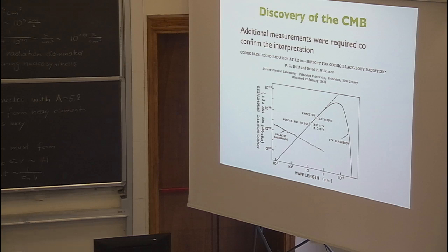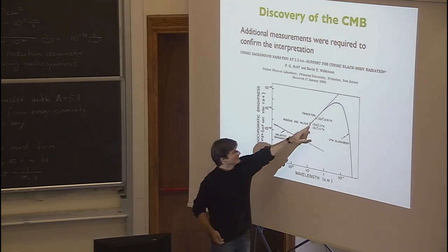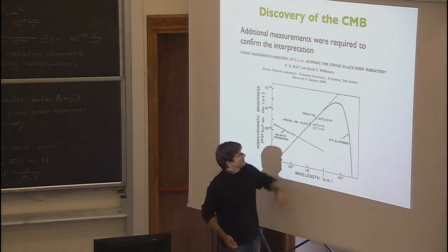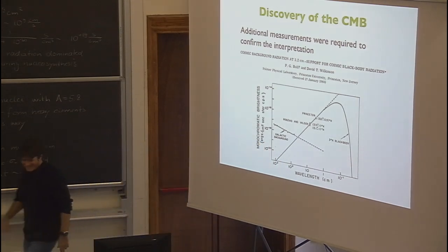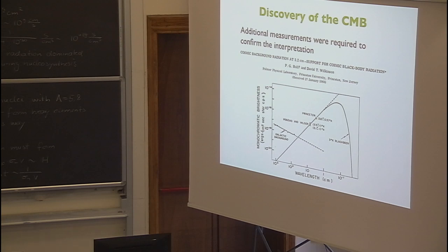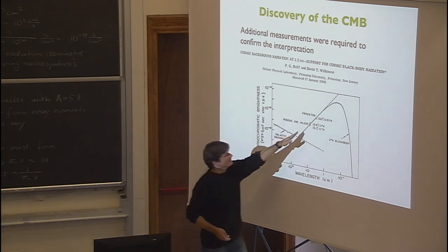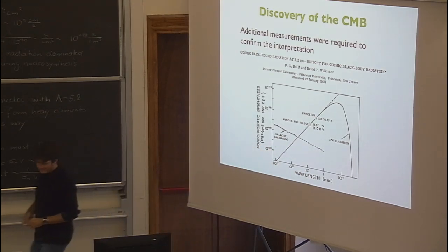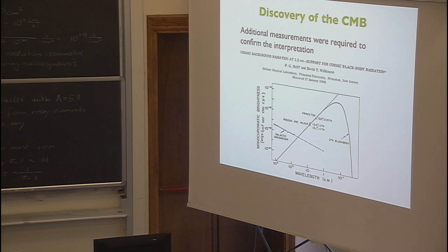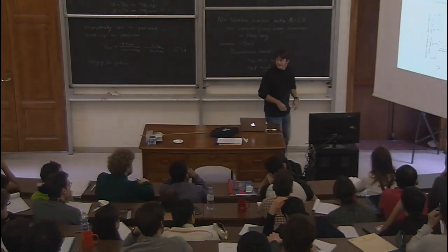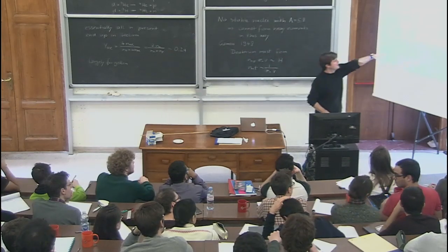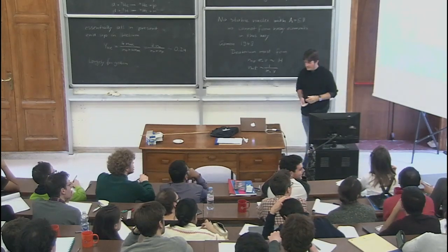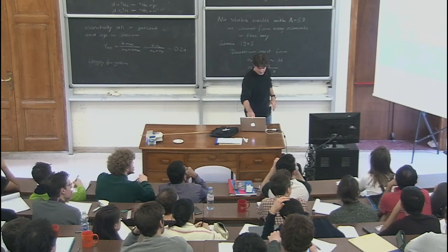Penzias and Wilson heard through Bernie Burke, who was told by Ken Turner about a talk by Jim Peebles, that there was a Princeton group looking for such radiation. They published their measurement of the excess antenna temperature at 4 GHz, and the Princeton group immediately interpreted it as cosmic black body radiation. Here's the measurement by Penzias and Wilson, and the measurement by the Princeton group. In the next lecture we'll study why this looks like a black body and what the departures from a black body are.